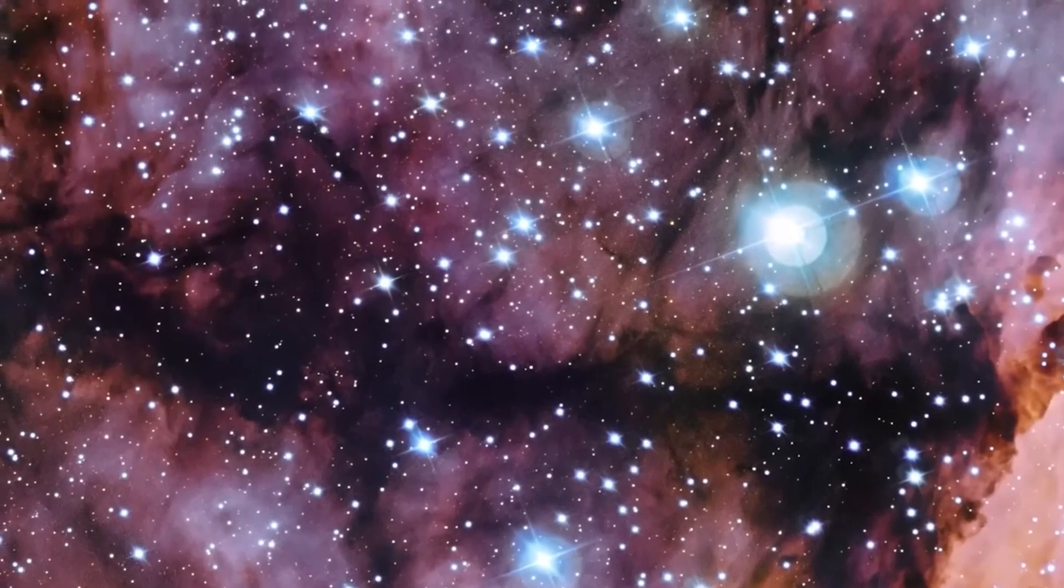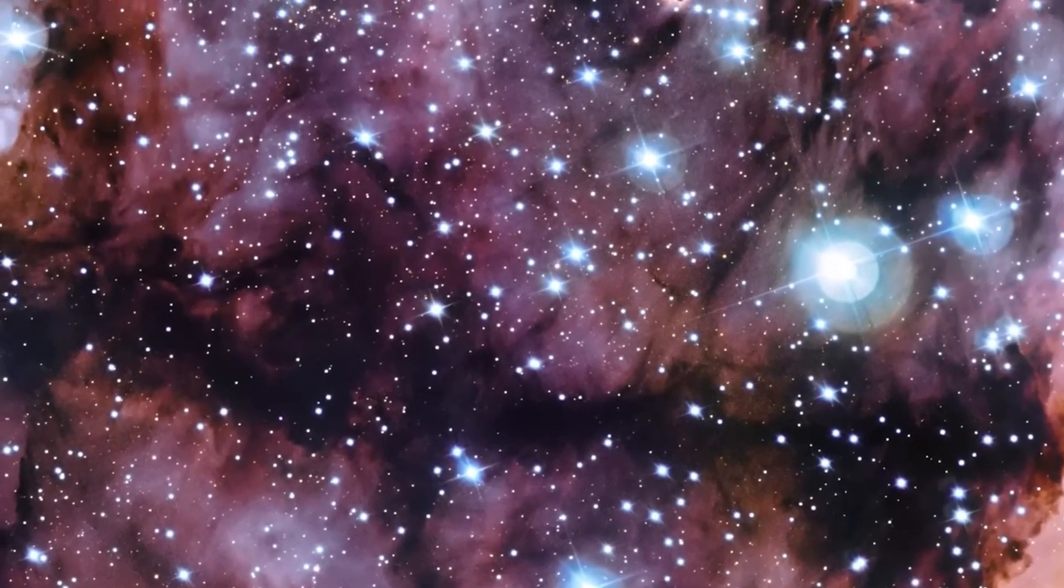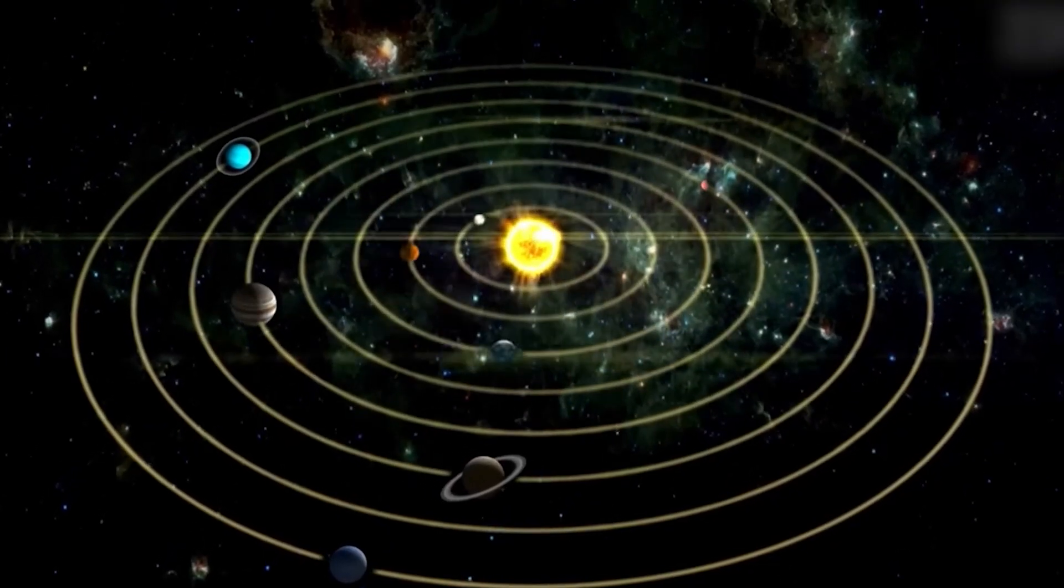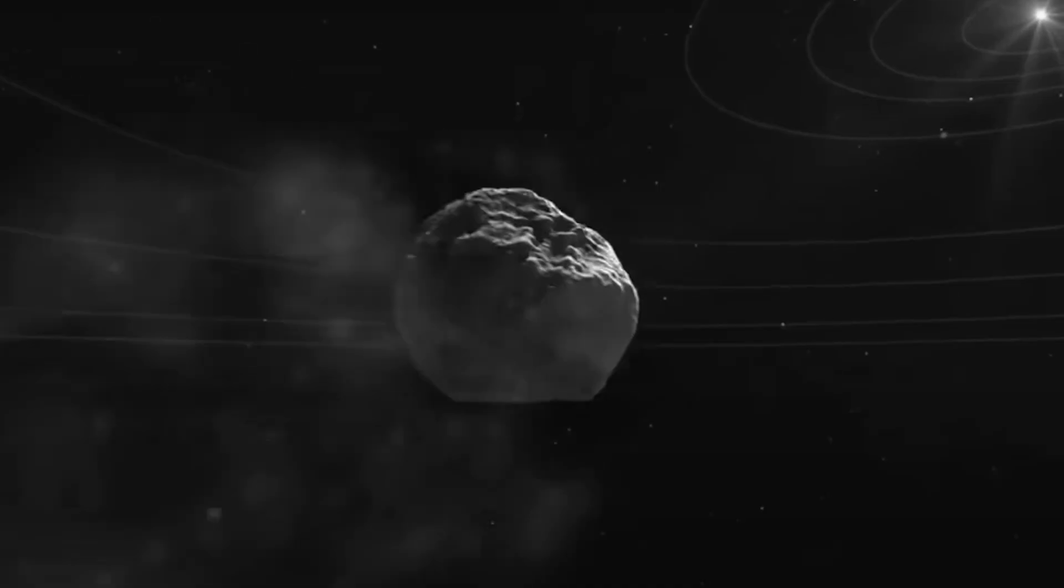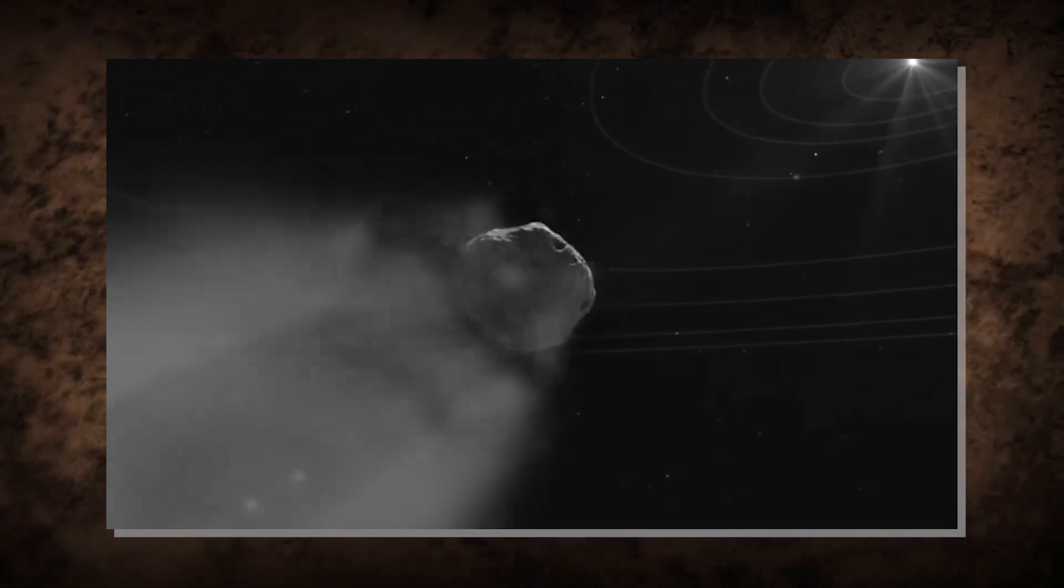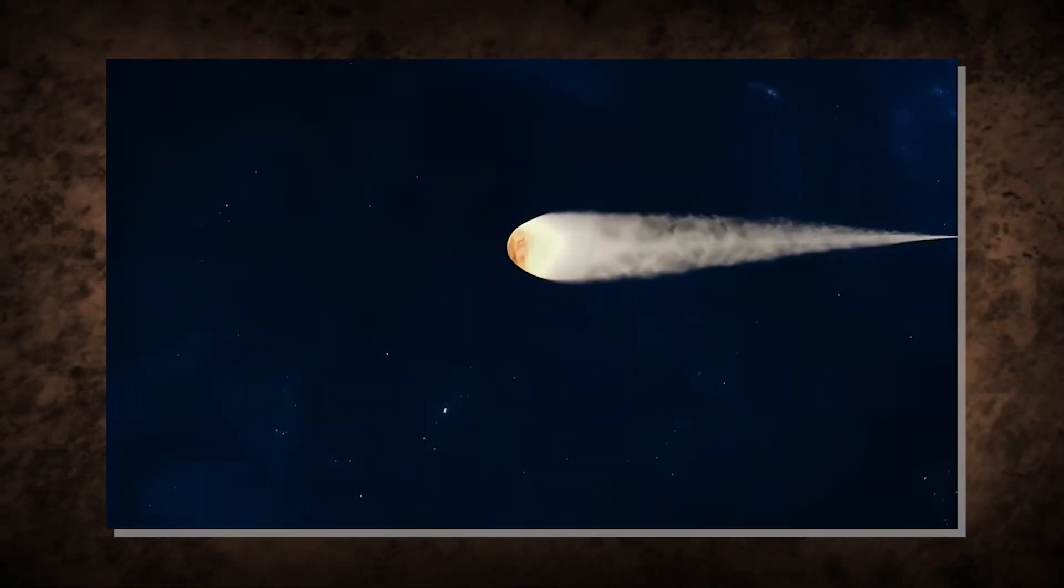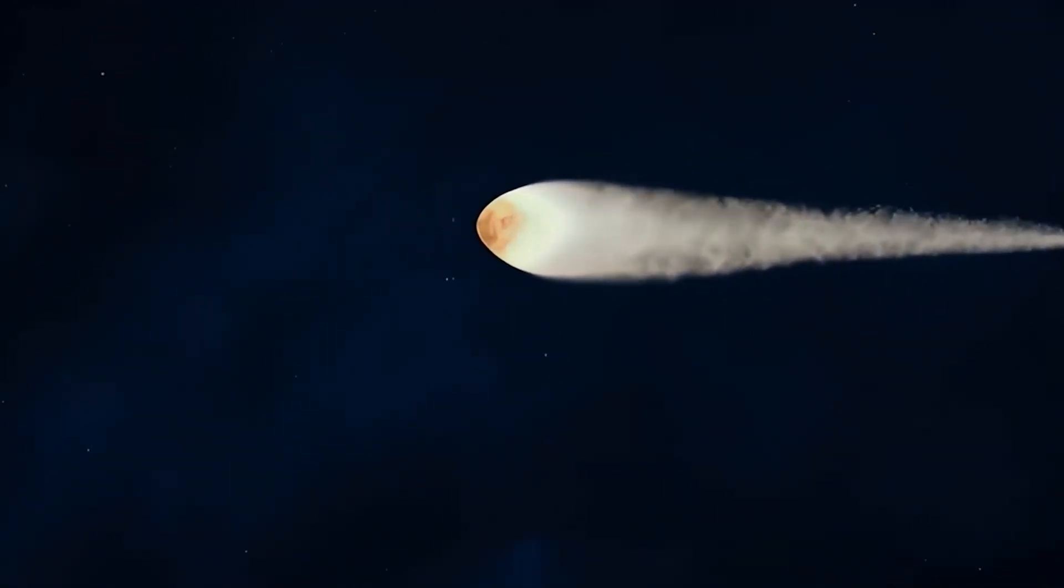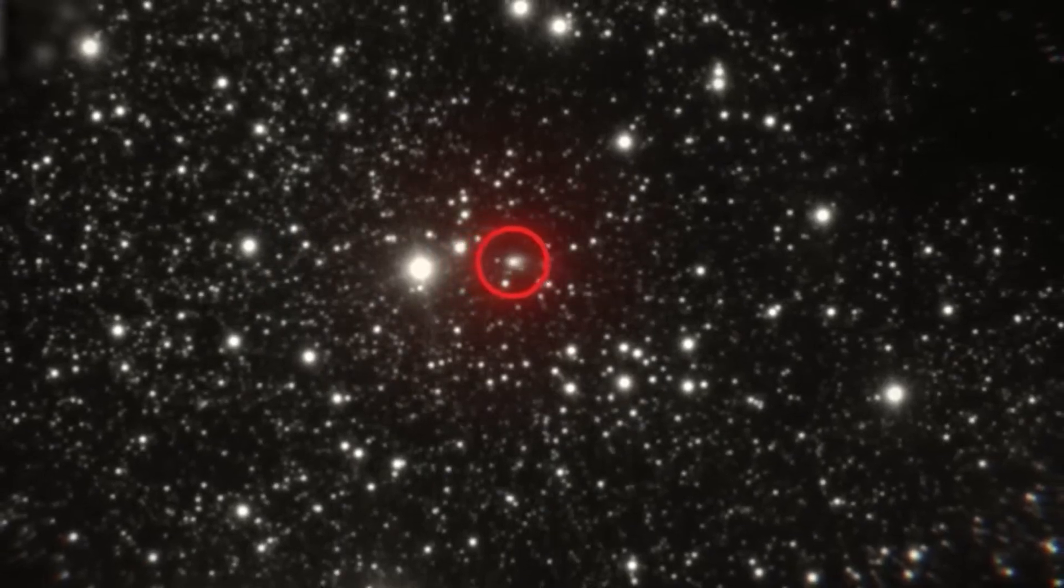Consider this. This object formed around a star we can't even identify, under conditions vastly different from our solar system, and somehow travelled across interstellar space to reach us. Whether it's a natural comet or something more mysterious, it represents our direct connection to the broader galaxy.